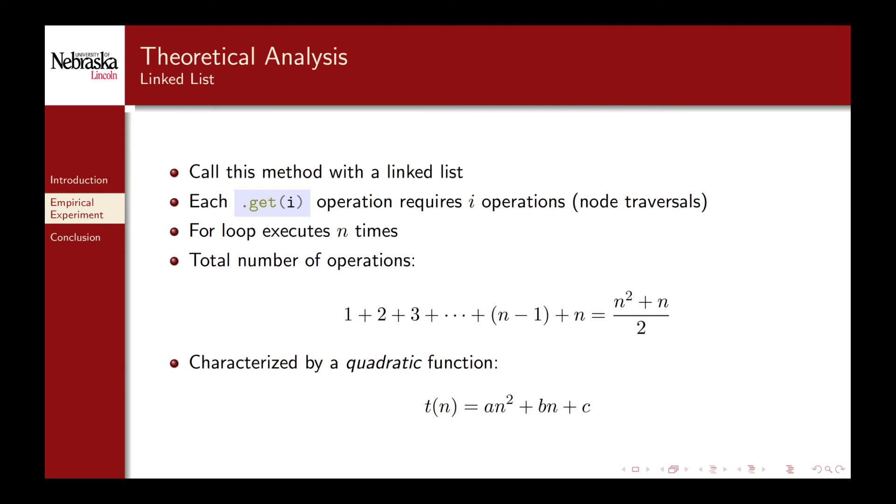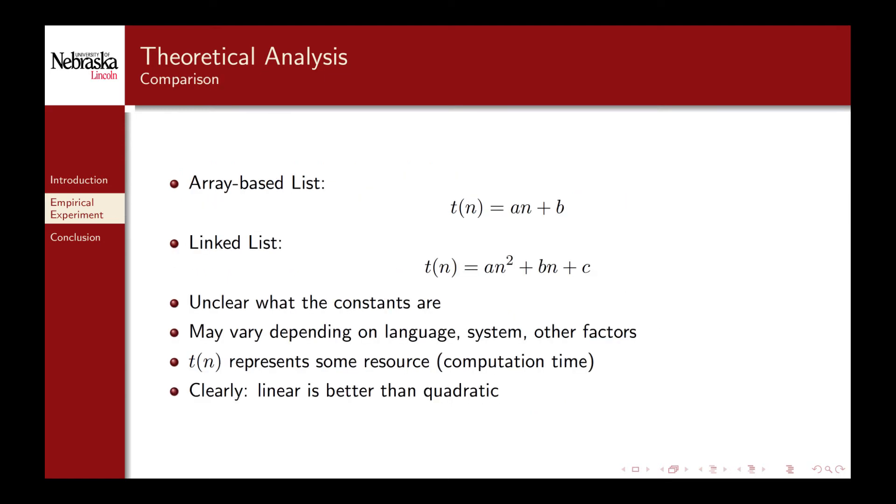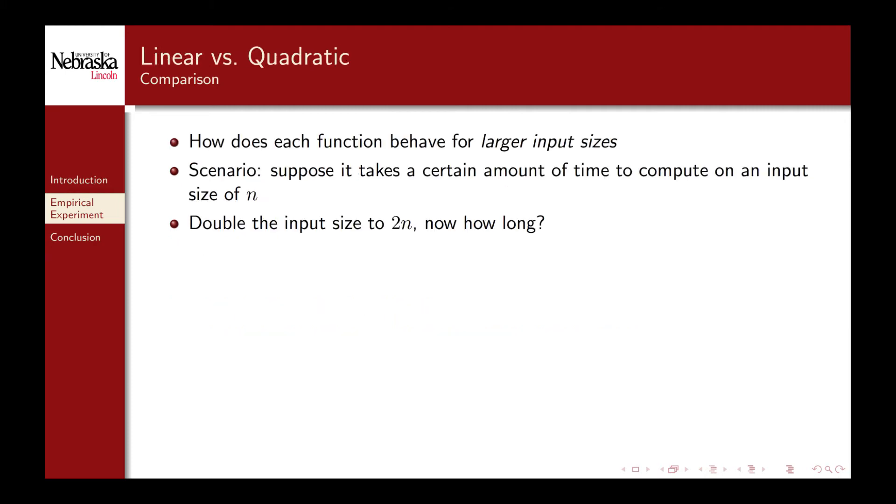Using Gauss's well-known formula gives us a closed form for the summation. The performance for a linked list can be characterized thus with a quadratic equation. Again the coefficients here will be system dependent and may vary. To recap we have a linear function that characterizes the array based list and a quadratic function that characterizes a linked list. I've named the function t sub n since it represents a computing resource, in this case computation time. Intuitively the linear solution is better because linear functions are smaller or more accurately have a slower rate of growth than quadratics. In fact this is the most important thing when analyzing algorithms.